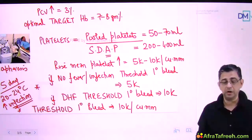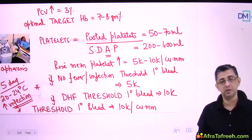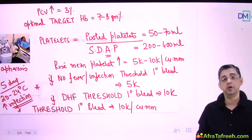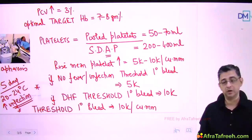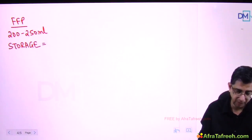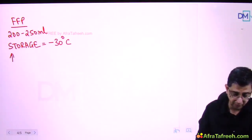In contrast, fresh frozen plasma does not contain cellular components, so chances of infection are significantly minimized. Fresh frozen plasma will never transmit cytomegalovirus because CMV travels via white blood cells, and stored fresh frozen plasma has no viable white blood cells. The volume of a fresh frozen plasma bag is in the range of 200 to 250 ml. Storage temperature is minus 30 degrees Celsius and it can be stored for as long as one year.